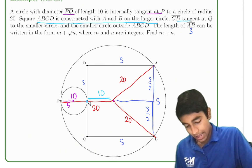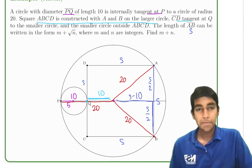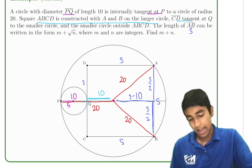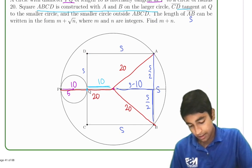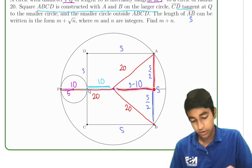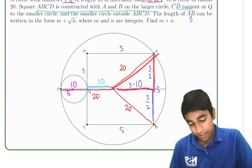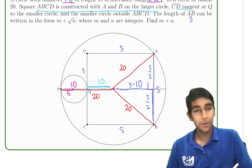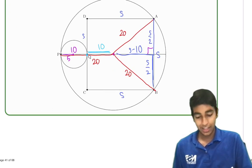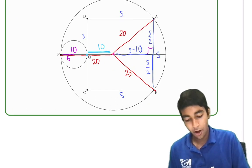That means this part will be s minus 10. Because the total length is s. AD is s. This is s minus 10. This is s over 2. This is 20. And this is the right angle, because it's a square. I know what that's calling for: Pythagorean theorem. And that is why we draw all radii. Because if we did not draw this 20 over here, how would we even have used it? We couldn't, we have no way to solve the problem.